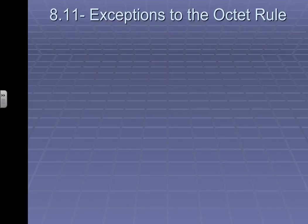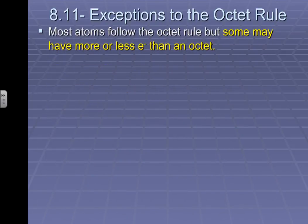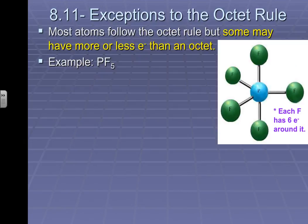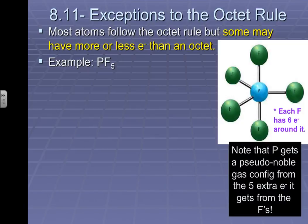When we talk about exceptions to the octet rule, it's first and foremost important to remember that what we did previously is pretty much the norm. Most atoms actually do follow the octet rule. This is a great example, PF5, phosphorus pentafluoride. You can see here in the picture that we have phosphorus in the middle and then five fluorine atoms all around it. So obviously if you have five attachments to something, you have exceeded the octet rule. What we end up with phosphorus is actually something called a pseudo-noble gas configuration because it is a relatively stable configuration for phosphorus, yet it exceeds the octet rule.